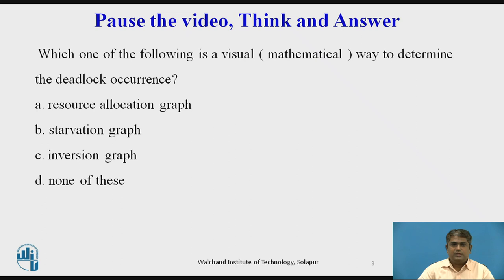Pause the video, think and answer: which of the following is the visual way to determine deadlock occurrence? Resource allocation graph, starvation graph, inversion graph, or none of these. The answer is A — resource allocation graph — which we can use to determine deadlock occurrence.